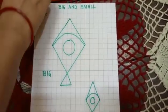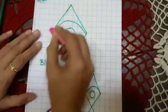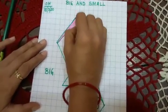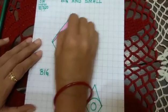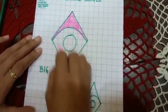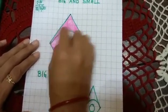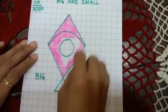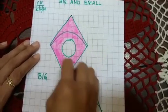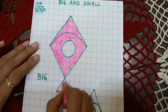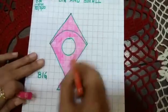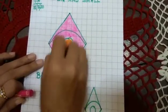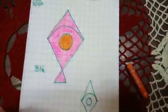Now take out your color and start coloring. I am using pink color. You can use any other colors. Here I am using orange color. Now big is over.